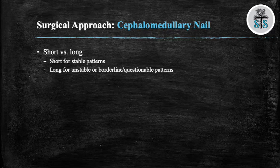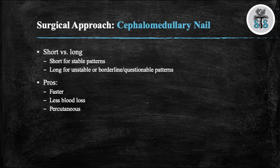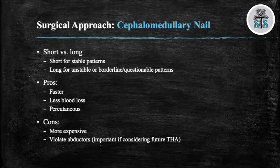Cephalomedullary nails can be divided into short and long nails. Short nails are indicated for stable patterns; long nails are indicated for unstable fractures or fractures that are borderline unstable. Some advantages are that it can be faster and you can have less blood loss as it is performed percutaneously. A disadvantage is that this device is more expensive and you violate the abductors, which can lead to a Trendelenburg gait and impact your surgical approach if the patient needs a total hip replacement in the future.